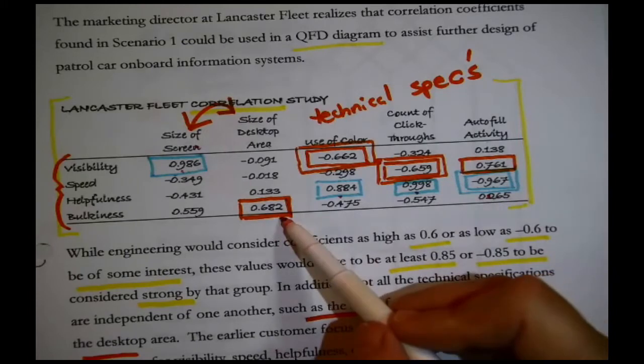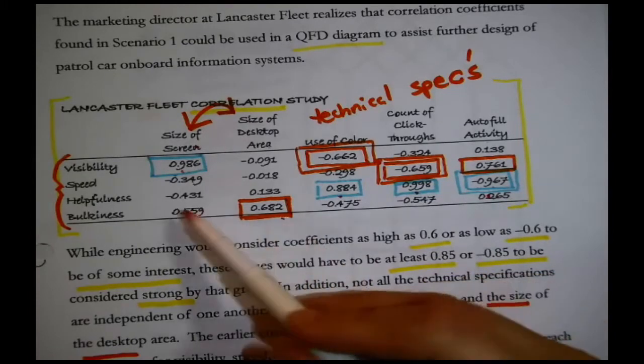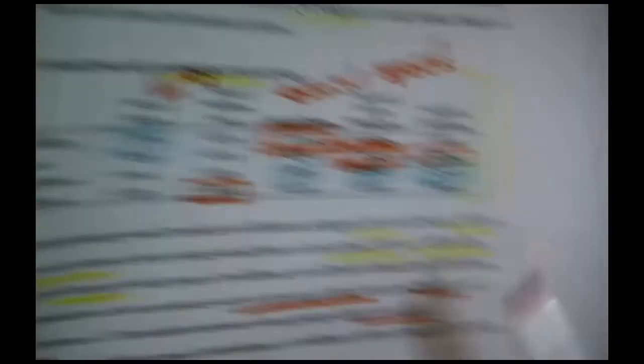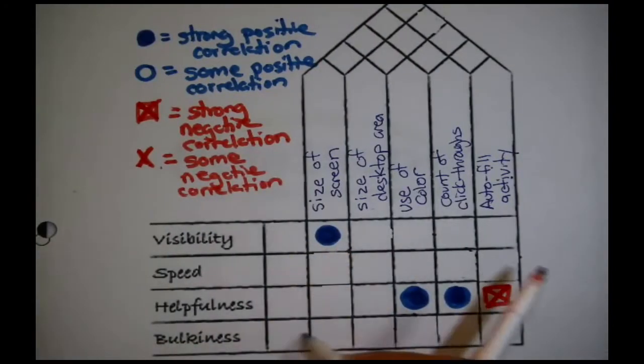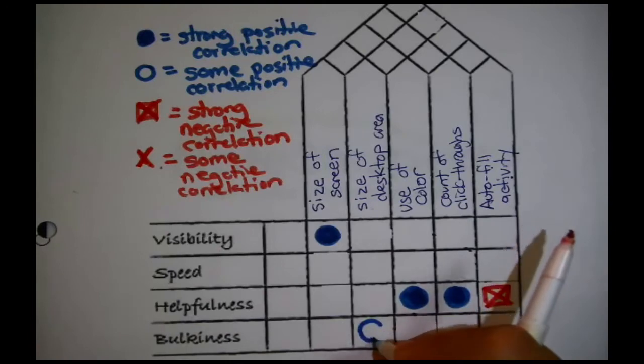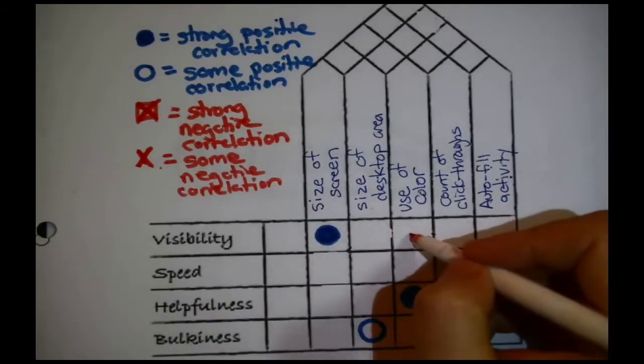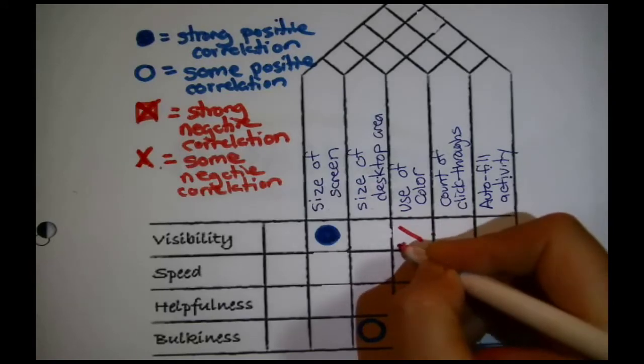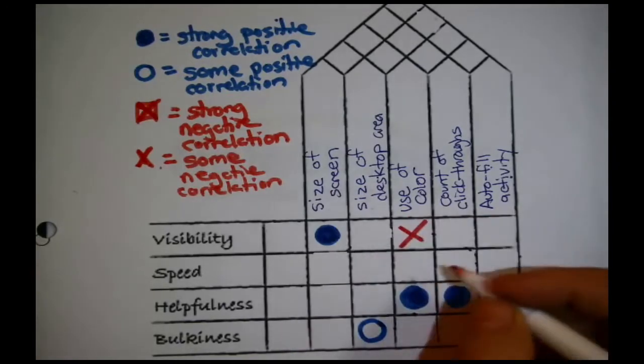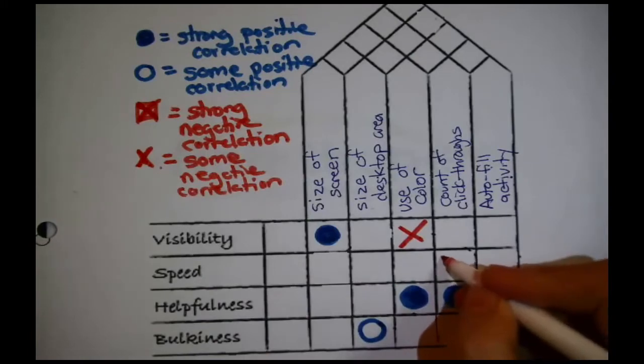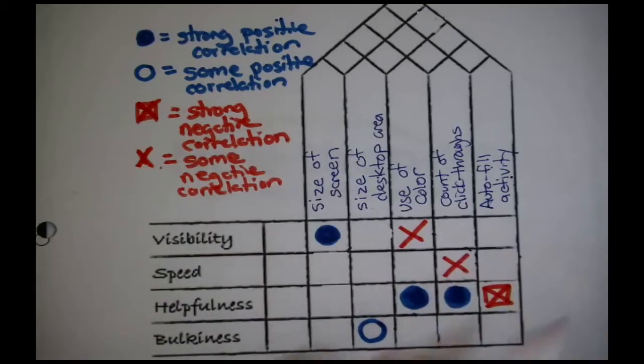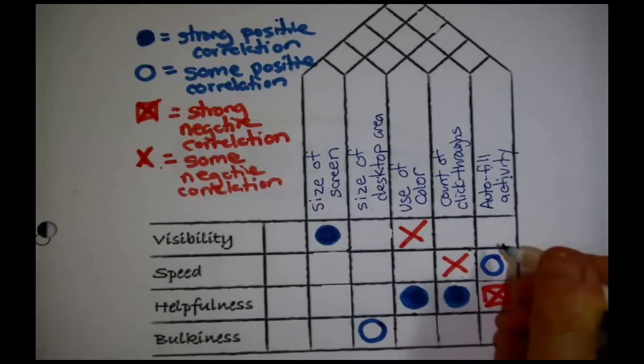We did basically the strong ones. Then, what about the ones of some interest, but not strong? Okay, bulkiness and the size of the desk area. Bulkiness is here, size of the desk area. An empty circle, there was some positive correlation. Versus visibility and use of color, there was some negative correlation. And speed and the count of click-throughs, there was some negative correlation. And speed and autofill activity, there was some positive correlation. There we go.